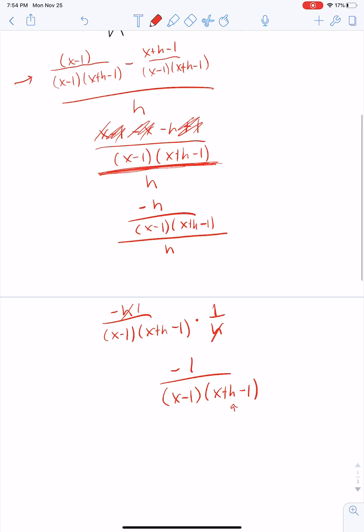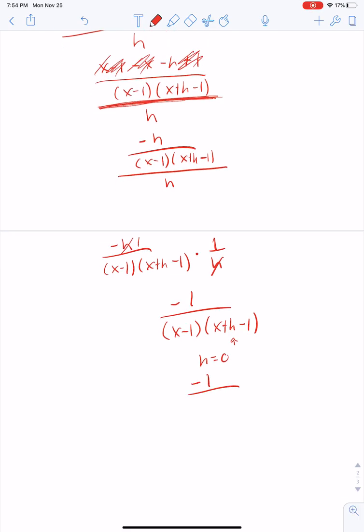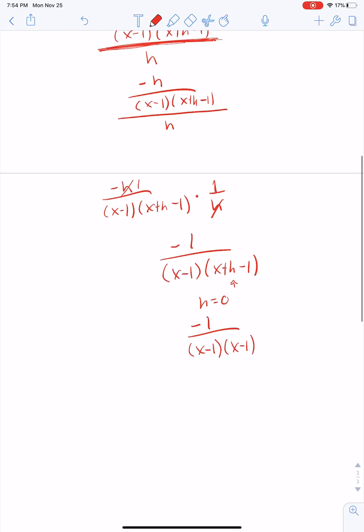h is an addend here, but not a factor. And so now I can calculate this with h equal to 0. And if h is equal to 0, then I have negative 1 over x minus 1 times x minus 1, which is negative 1 over x squared minus 2x plus 1.